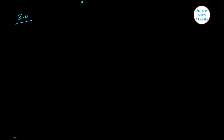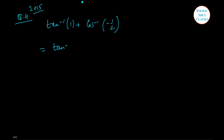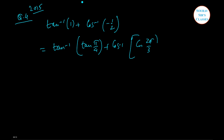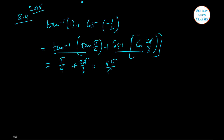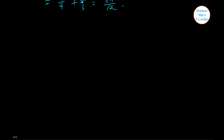Question 4 came in 2015: write the principal value of tan⁻¹(1) + cos⁻¹(−1/2). Here tan⁻¹(1) = π/4, since tan(π/4) = 1. And cos⁻¹(−1/2) = 2π/3, just like in the very first question. So the expression gives π/4 + 2π/3, and solving that gives the final answer.